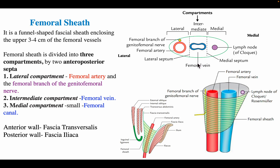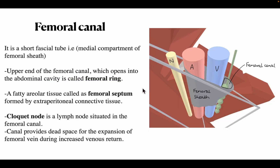The femoral sheath is formed by the fascia transversalis anteriorly and fascia iliaca posteriorly. The femoral canal is a short fascial tube — the medial compartment of the femoral sheath. The upper end of the femoral canal, which opens into the abdominal cavity, is called the femoral ring. A fatty areolar tissue called the femoral septum is formed by extraperitoneal connective tissue, and a lymph node is present in the femoral canal. This canal provides a space for the expansion of the femoral vein during increased venous pressure.